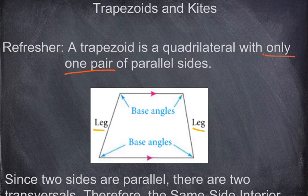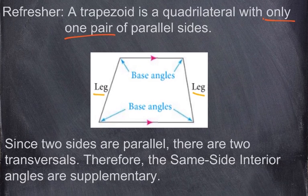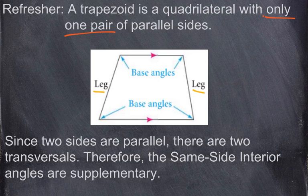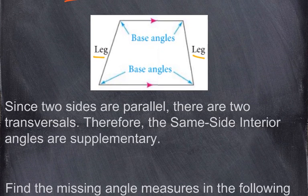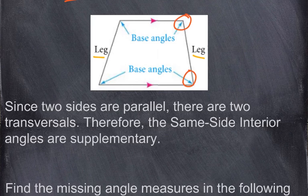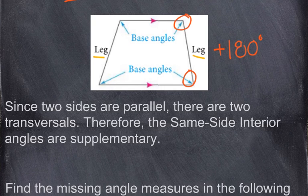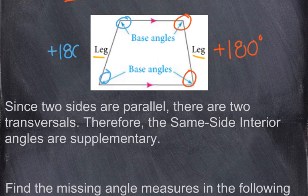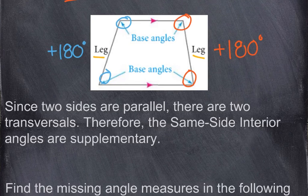Since the two sides are parallel — the top and bottom — both legs play the role of transversals; there are two transversals. Therefore, the same-side interior angles are supplementary. So this angle and this angle will add up to 180 degrees. They are supplementary, 180 degrees. Likewise, these two angles are also supplementary — they add up to 180 because they are on the same side of the transversal and interior, inside the parallel sides. That's a big thing to know.